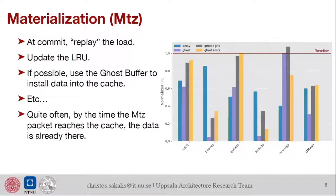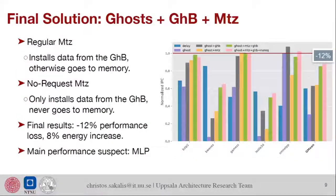Finally, the solution we have right now is a combination of all three. The idea is that when you do a ghost access, a speculative load, you put it in a ghost buffer. The data you bring, you put them in a small ghost buffer. Then when you know that the data is safe, then you do this materialization and you can bring the data either from the ghost buffer or from the memory if they're not there. For this, we end up getting around 12% performance loss and 8% energy increase in the core.